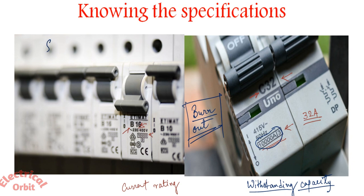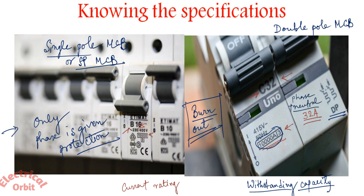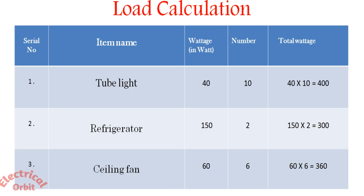In the first picture this is called single pole MCB or SP MCB, and here in the second picture it is called double pole MCB or DP MCB. In this type of MCB, only the phase is given protection, and in this kind of MCBs, both phase and neutral is given protection.